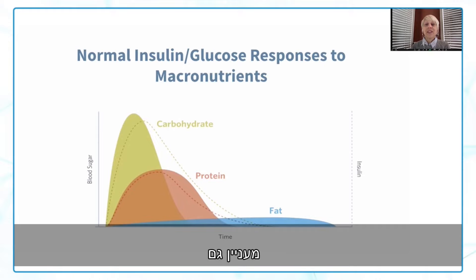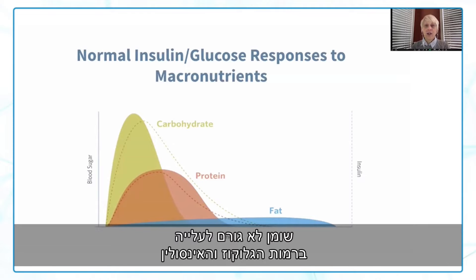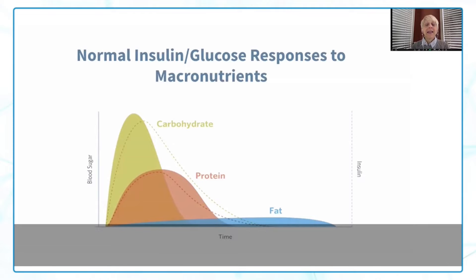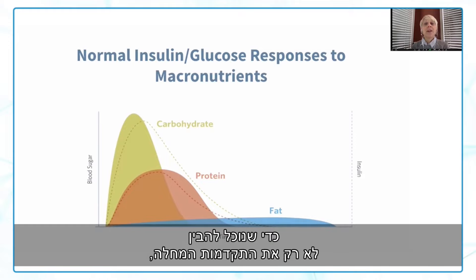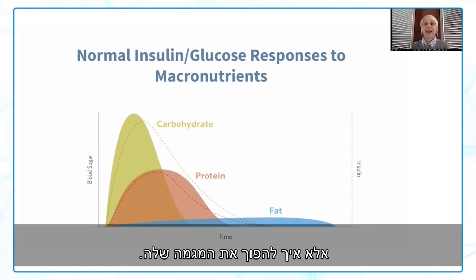Of course, when someone has metabolic disease, the rise in glucose and insulin with carbohydrate consumption is greater and lasts longer. The interesting thing is what happens when we consume fat — fat does not cause a glucose or insulin rise in people who have diabetes or normal metabolic health. This is really important to understand, not only for disease progression, but also for how to reverse disease.